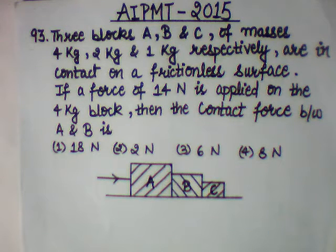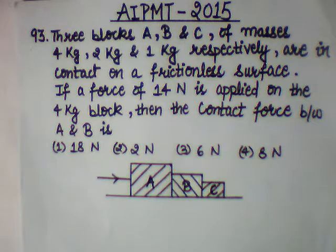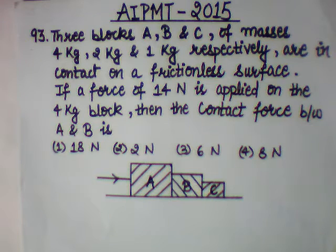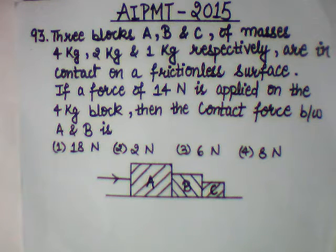Today I am going to teach you how to solve AIPMT 2015 physics question paper. Here we have taken question number 93. Three blocks A, B and C of masses 4 kg, 2 kg and 1 kg respectively are in contact on a frictionless surface. If a force of 14 N is applied on the 4 kg block, then the contact force between A and B is...